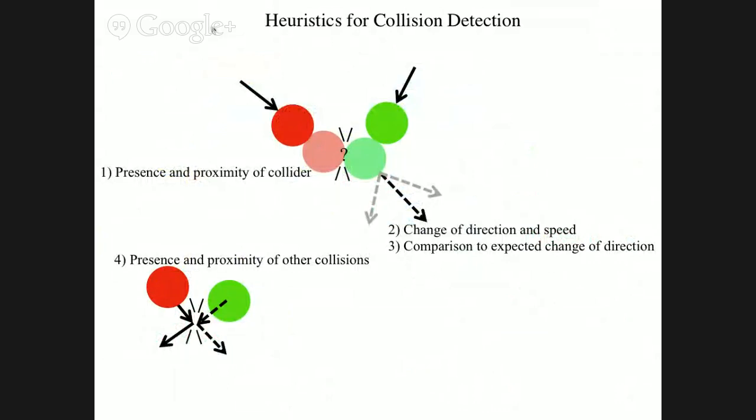Some examples of the heuristics: to detect a collision, the system tends to think a ball has collided with another ball or wall if there's another ball or wall close to it, if there's a sudden change in direction and speed, if the particular way it changes speed is exactly what you'd predict from a collision with that object, and if there are many other collisions going on in the background — then it tends to interpret an otherwise ambiguous event as a collision itself.